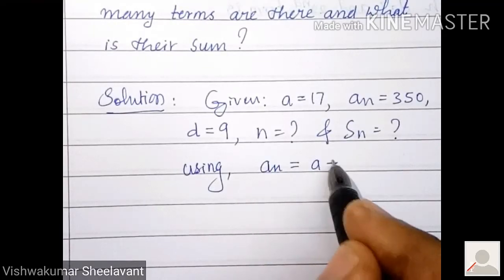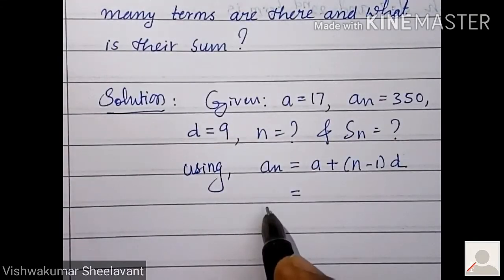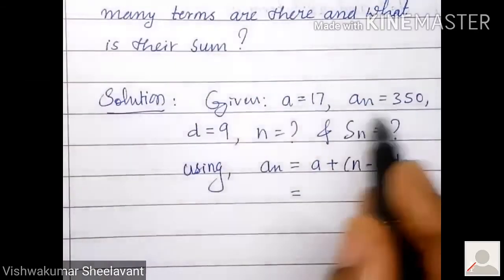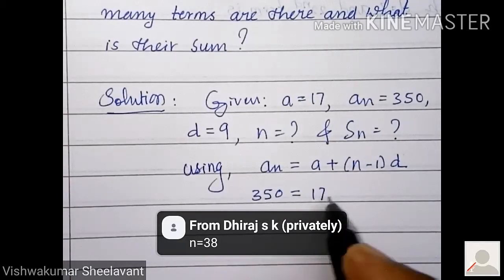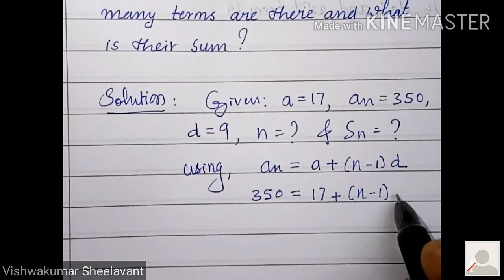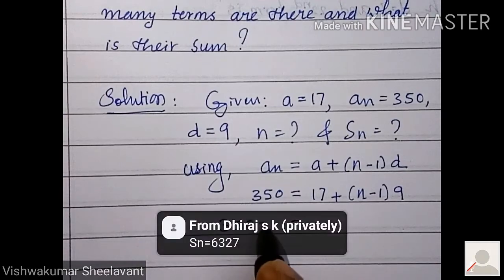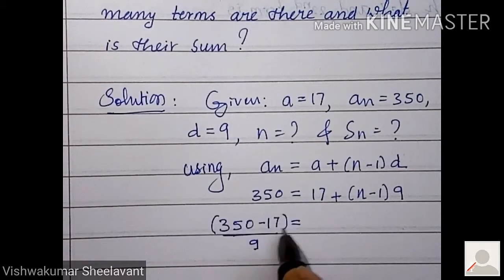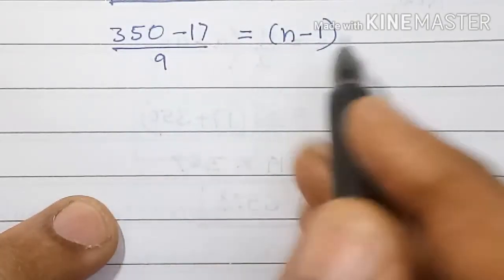Using an is equal to a plus n minus 1 into d. an is 350, a is 17 plus n we have to calculate, keep it as it is, so n minus 1 into 9. 350 minus 17 by 9 equal to n minus 1.